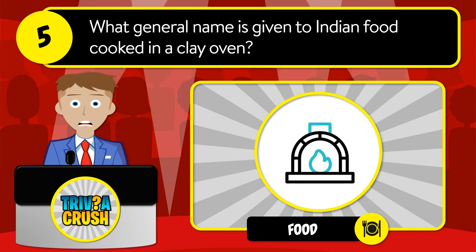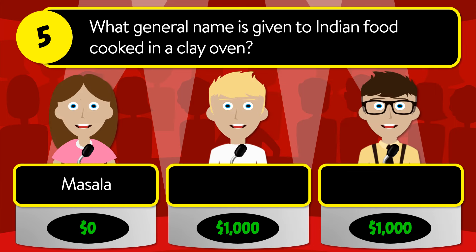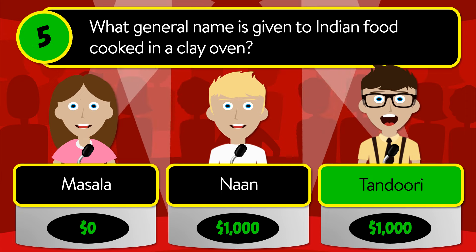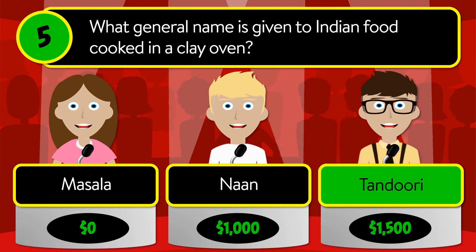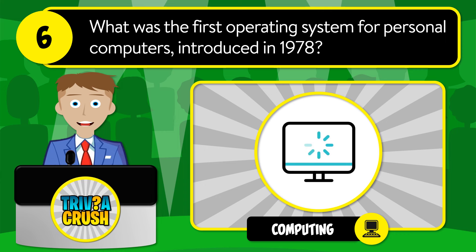Question number five: what general name is given to Indian food cooked in a clay oven? Is it masala, naan, or tandoori? The correct answer is tandoori.